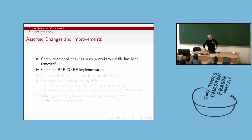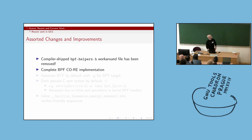Another thing we were lacking was BPF CO-RE — compile once, run everywhere — basically building your BPF programs on one kernel and then running them on a different kernel version. That has finally been completed in GCC.